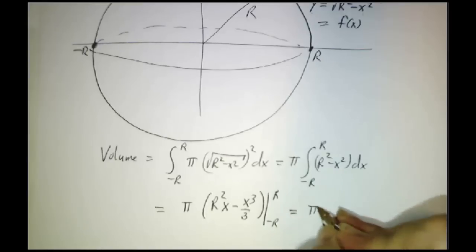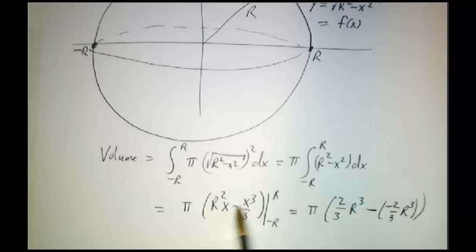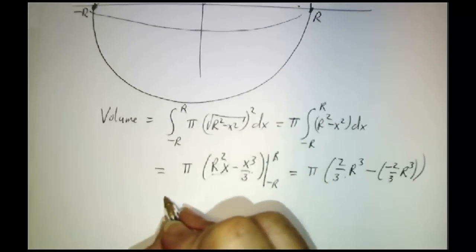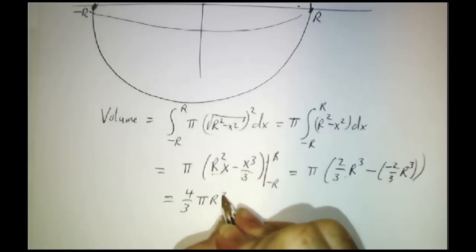It's pi times r squared x minus x cubed over 3 evaluated at r and at minus r. And that gives you pi times 2 thirds r cubed minus negative 2 thirds r cubed. Because you plug in r here, you get r cubed and then you subtract 1 third of r cubed to get 2 thirds of r cubed. And you get minus that when you plug in minus r. And the total comes out to 4 thirds pi r cubed, which of course is the usual formula for the volume of a sphere.